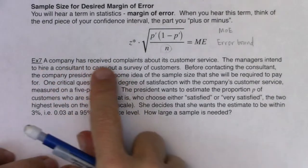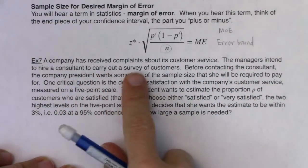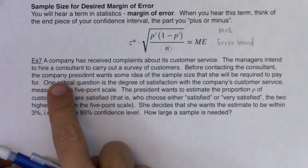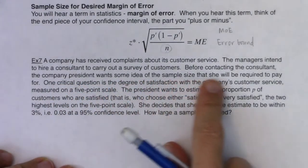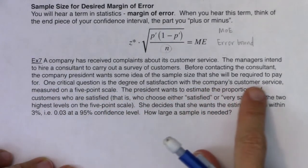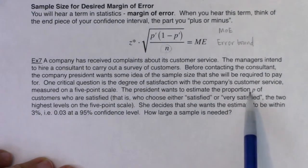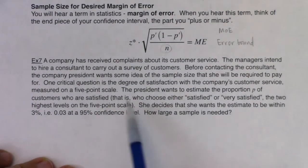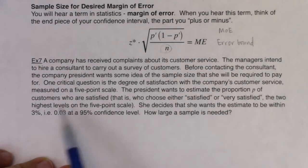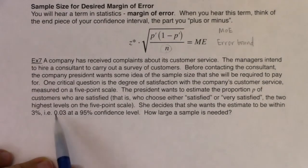A company has received complaints about its customer service. The managers intend to hire a consultant to carry out a survey of customers. Before contacting the consultant, the company president wants some idea of the sample size she will be required to pay for. One critical question is the degree of satisfaction with the company's customer service, measured on a five-point scale. The president wants to estimate the proportion P of customers who are satisfied — that is, who choose either satisfied or very satisfied, the two highest levels on that five-point scale. She decides she wants the estimate to be within 3%, i.e. 0.03, at a 95% confidence level. How large of a sample size is needed?